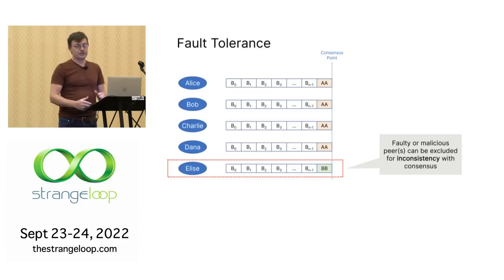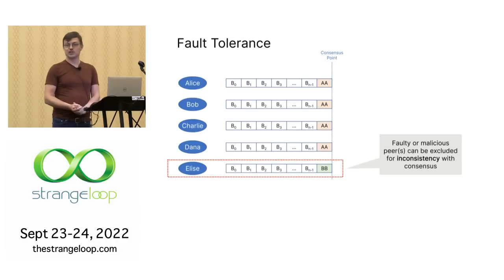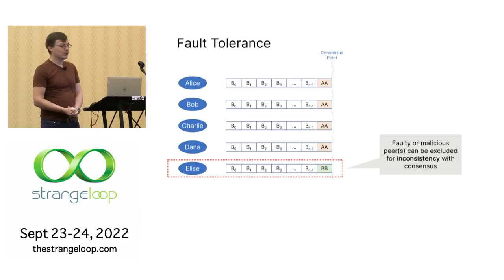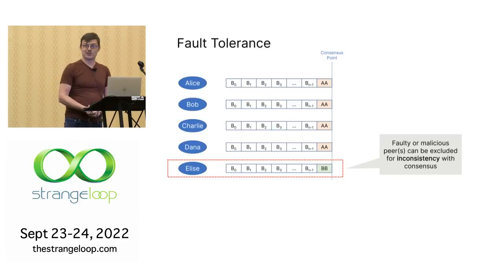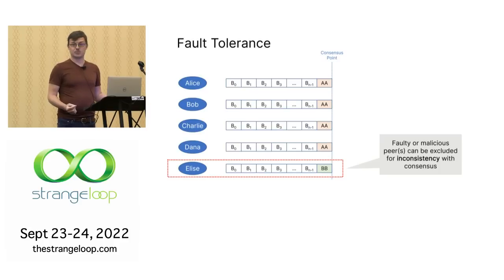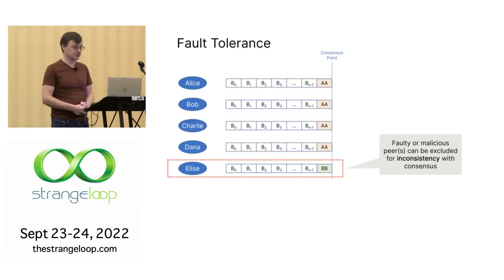It's also fairly fault-tolerant. If someone changes their mind and says they want a different block, everyone can see that this is inconsistent with the consensus they've previously agreed. Whether it's a faulty peer or a malicious peer, it doesn't really matter — you can just ignore them. They're not playing your game, so you exclude them from future consideration.